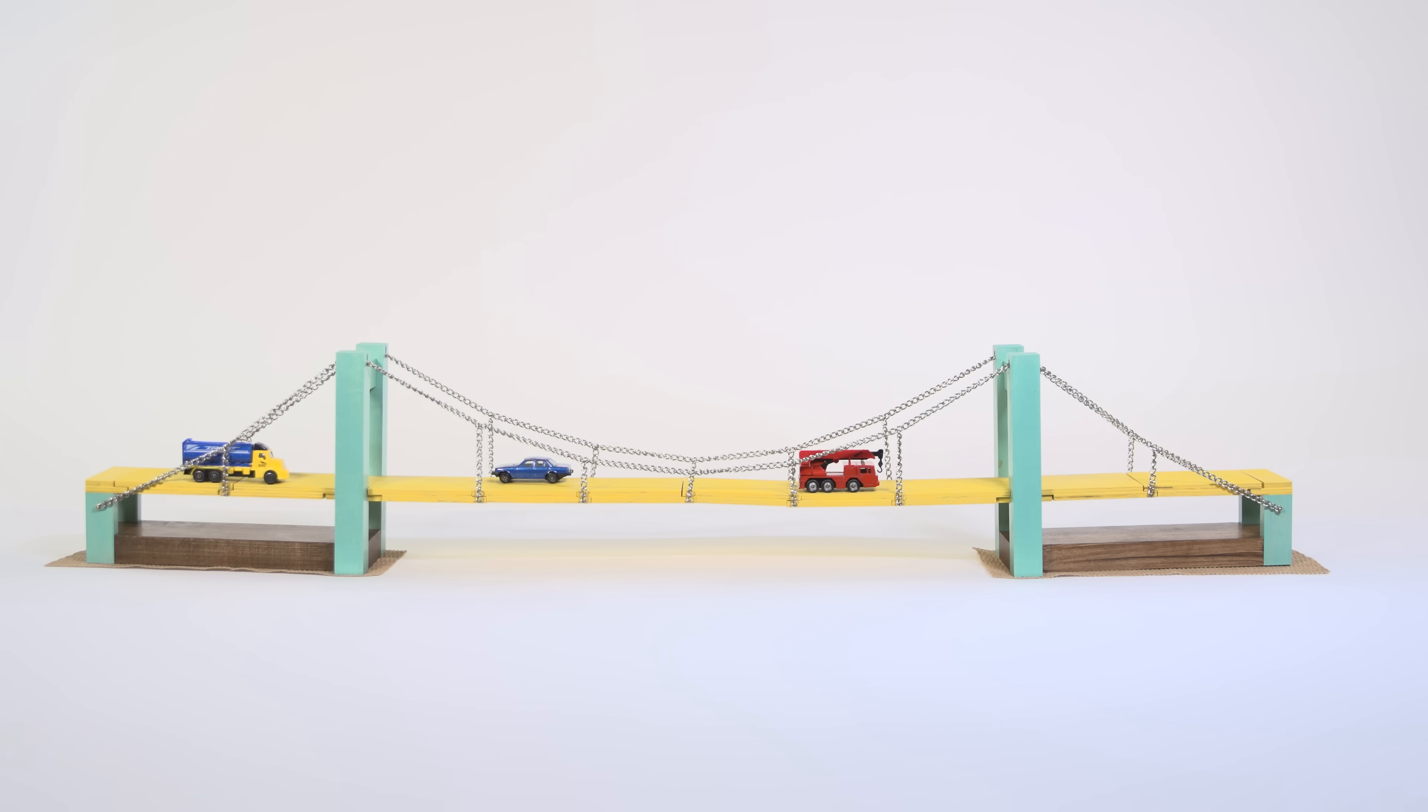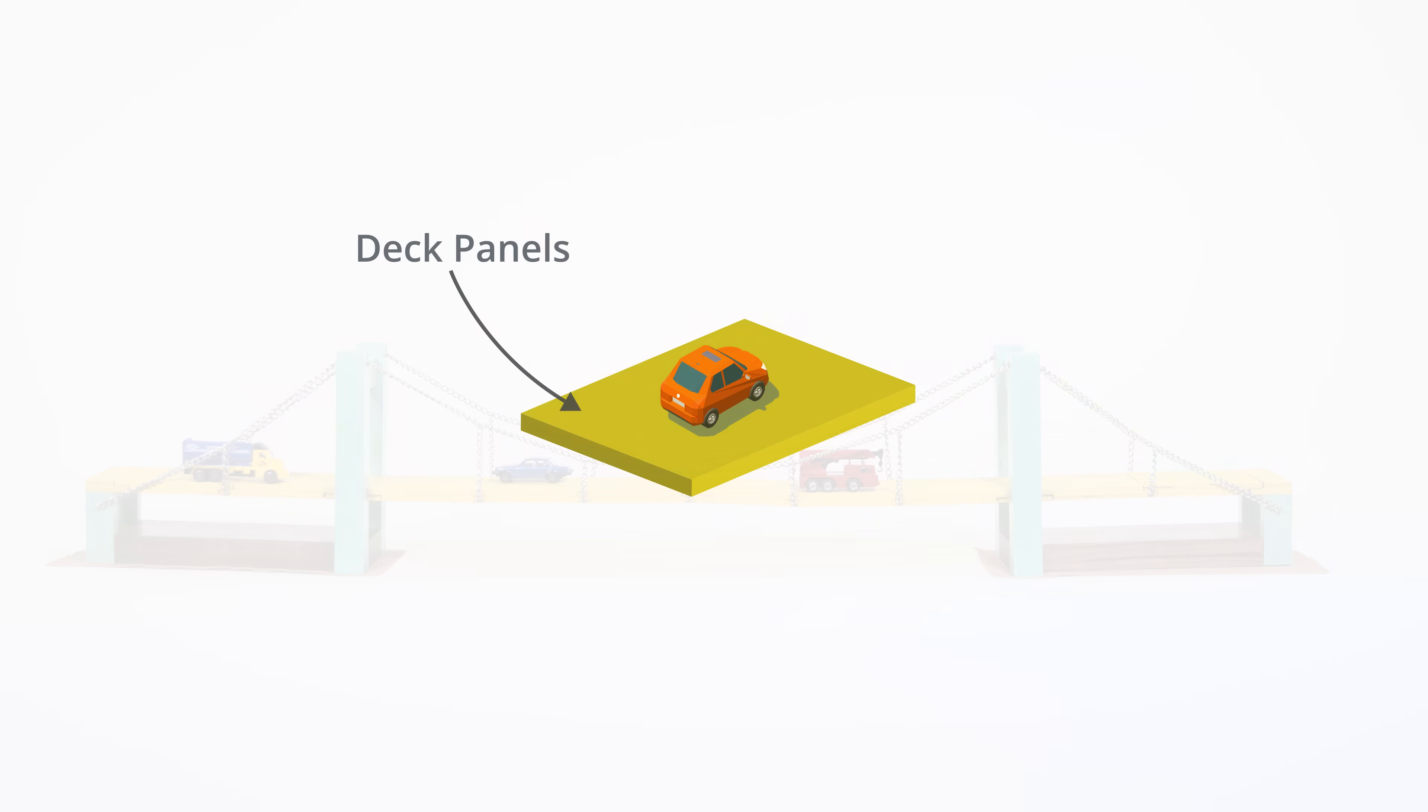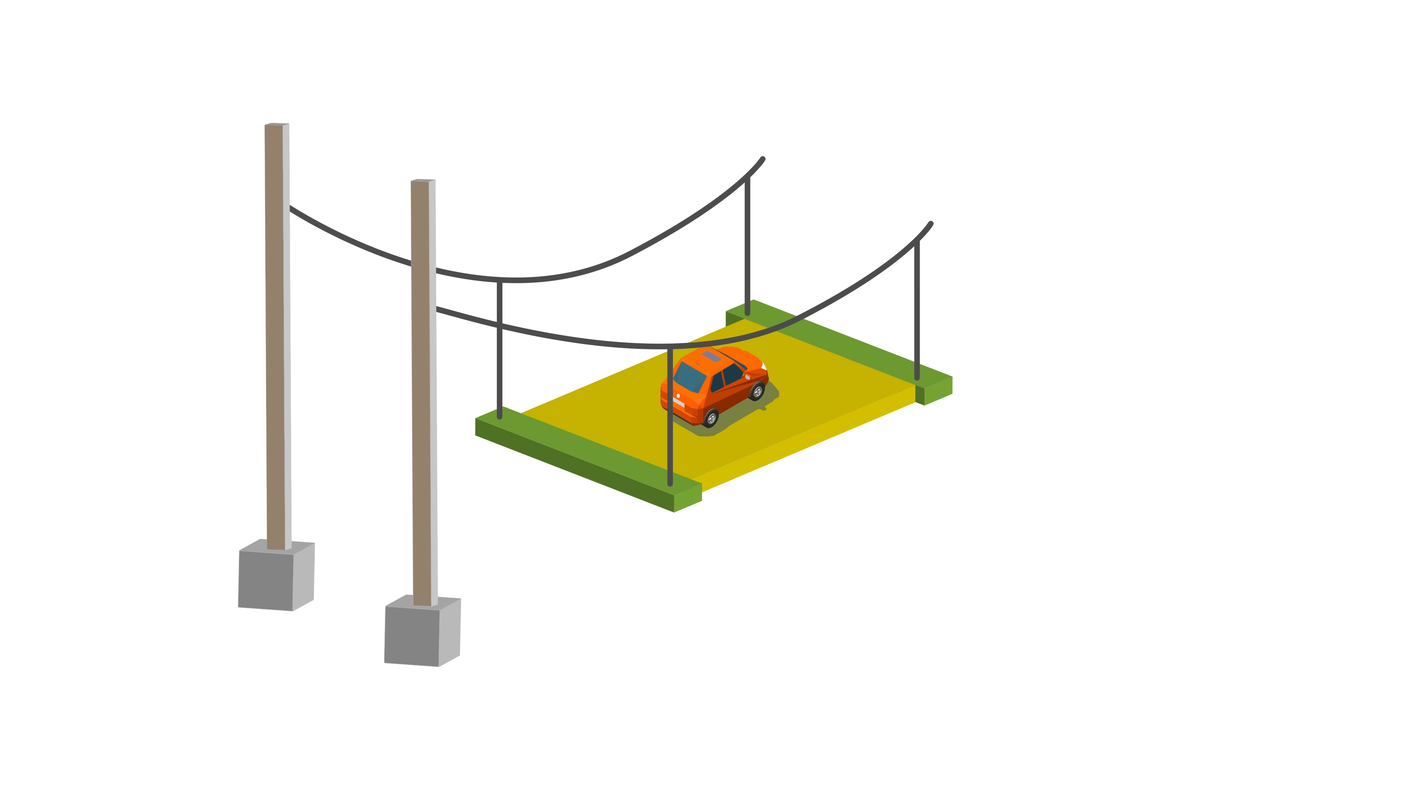The next challenge is how to transfer the vehicle and other loads to the main cables. This load transfer is usually done using deck panels, and they are carried by beams running across the width of the bridge. The ends of these transverse beams are in turn carried by vertical rods or wires called suspenders, and they are in turn connected to the main cables, which rest on the towers and their foundations. The complete load transfer path involves the deck panels, transverse beams, suspenders, main cables, towers, and foundations.